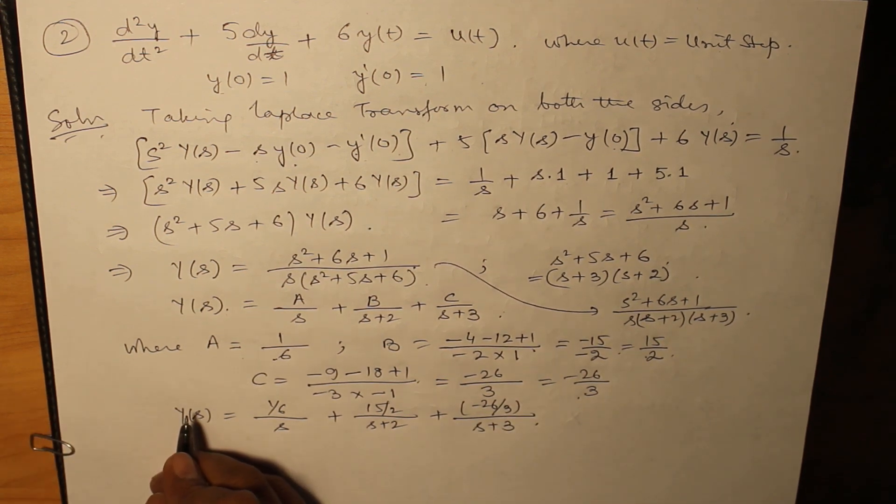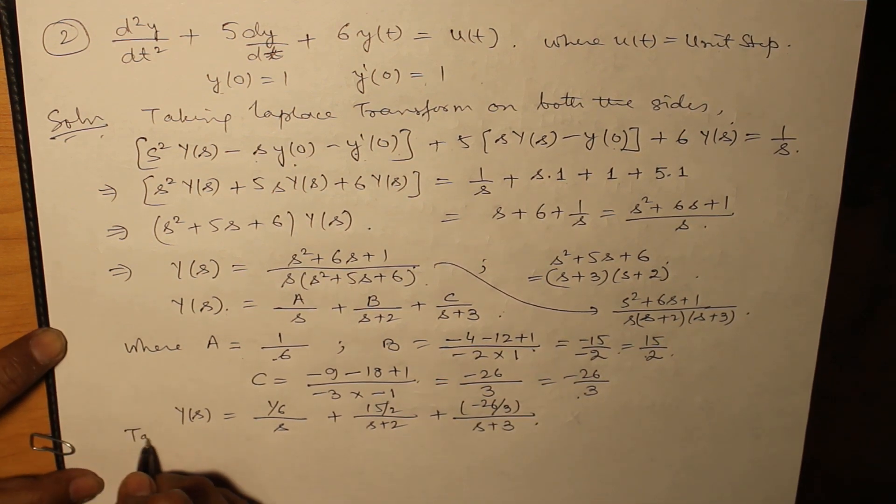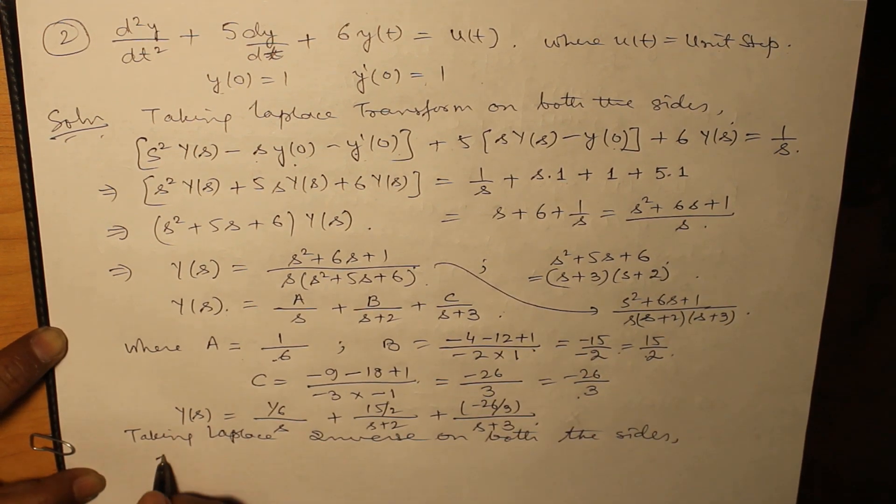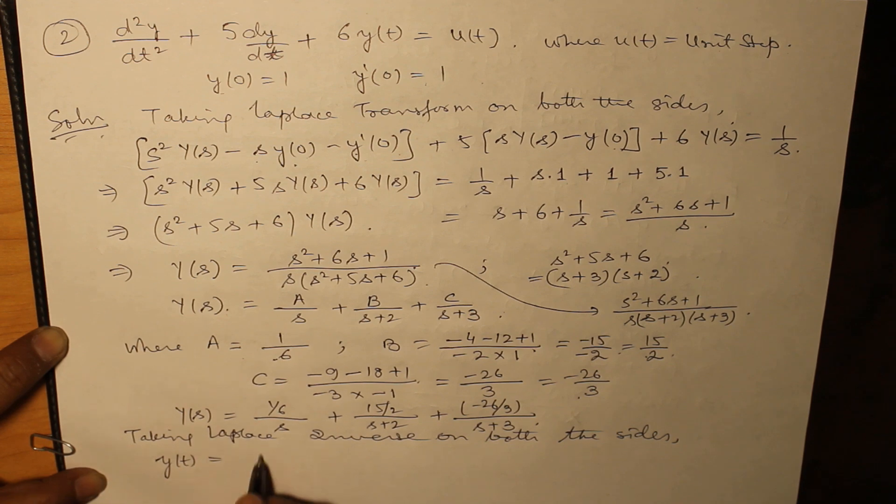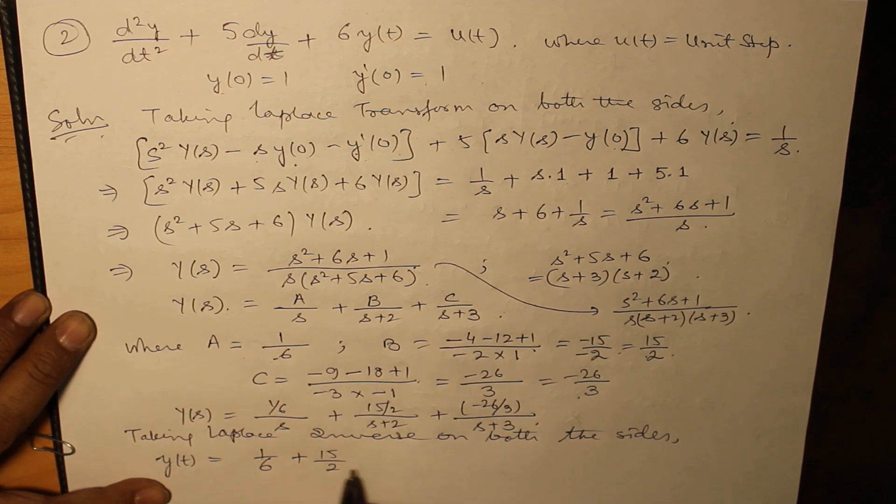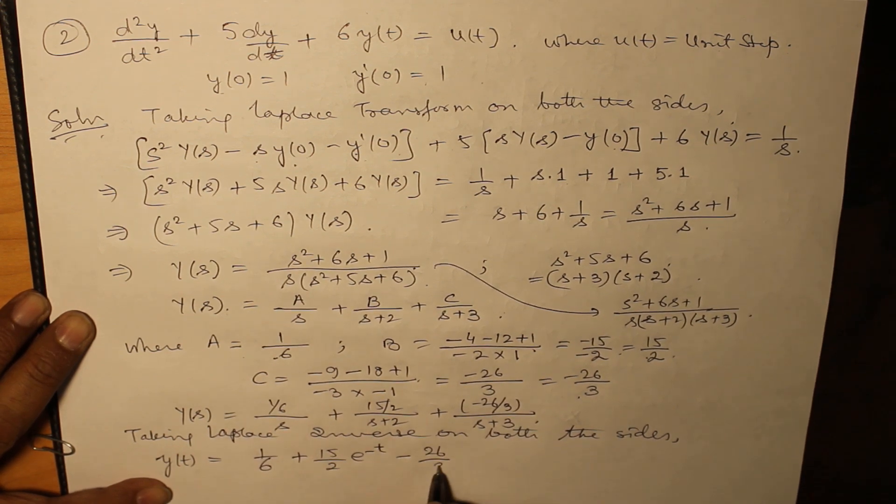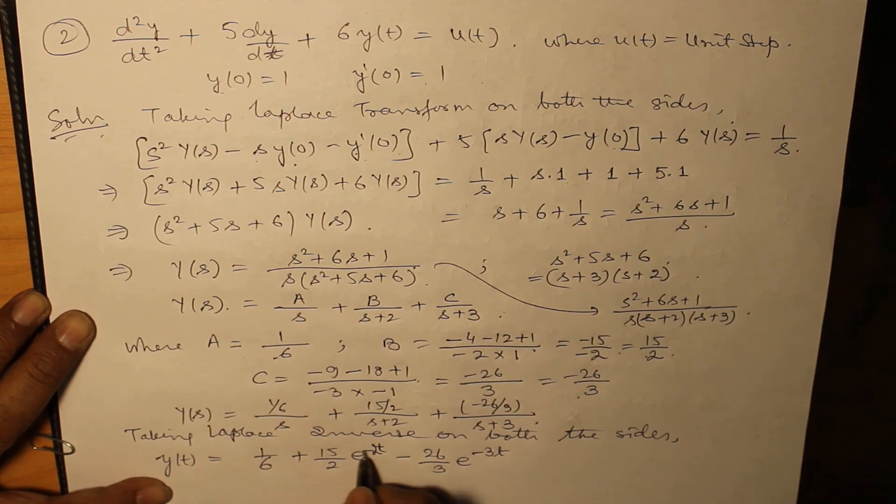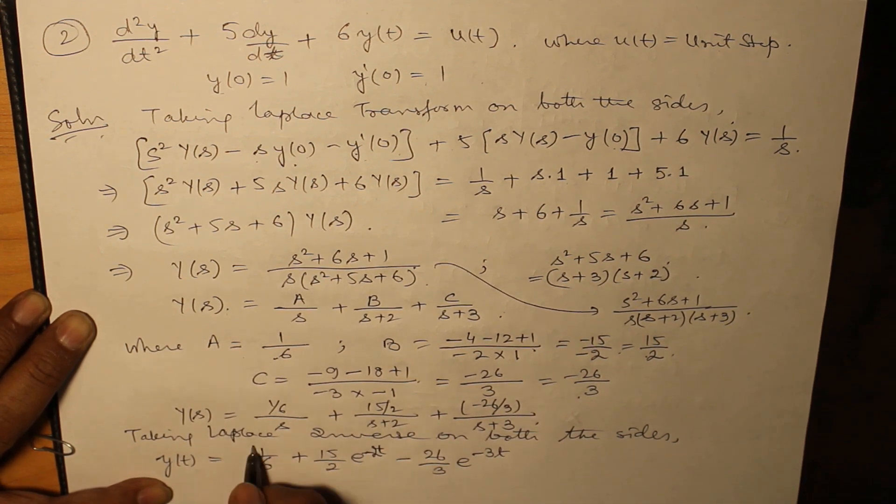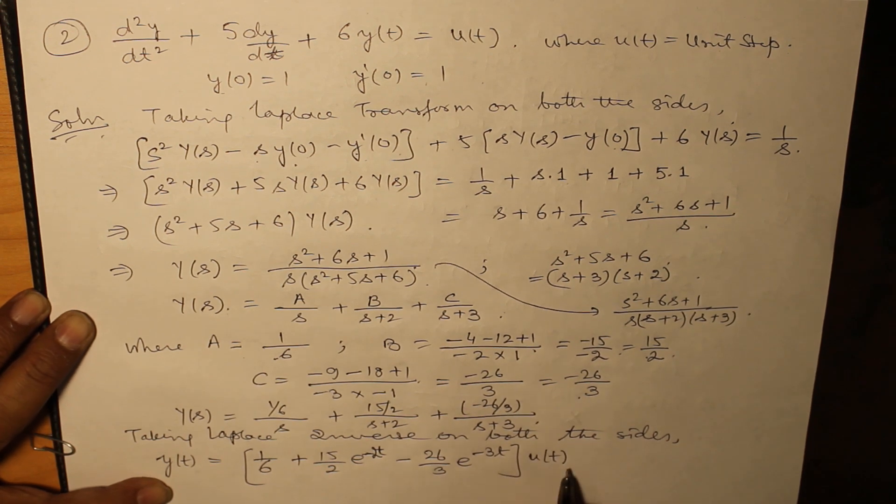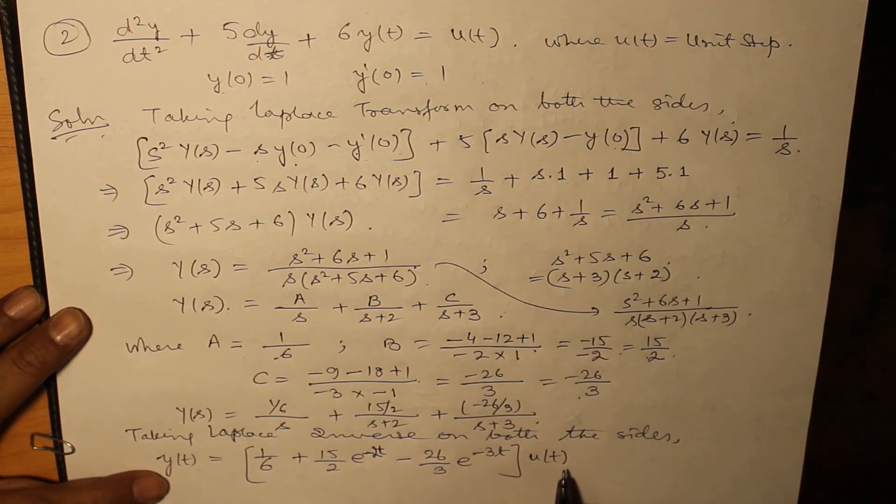Taking Laplace inverse on both the sides, we obtain y(t) as being equal to 1/6 + 15/2·e^(-2t) - 26/3·e^(-3t), and all of them multiplied onto u(t), that is for t greater than or equal to 0.